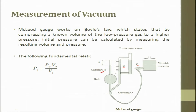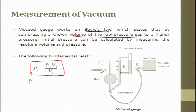The Megalode gauge works on Boyle's Law, which states that by compressing a known volume of low pressure gas to a higher pressure, the initial pressures can be calculated by measuring the resulting volume and pressure. The fundamental relationship is P1V1 = P2V2, rearranged as P1 = P2V2 / V1.